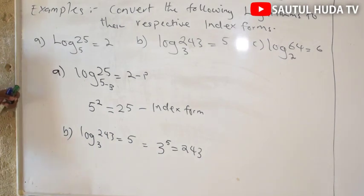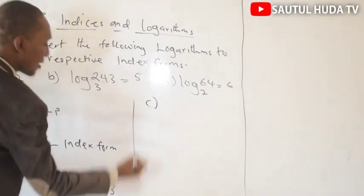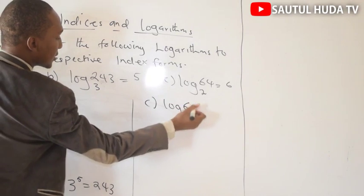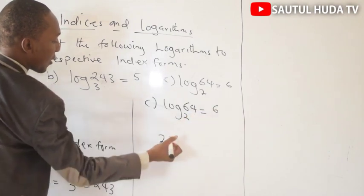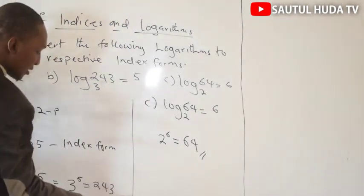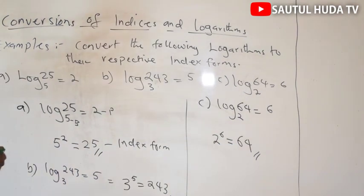Example C: log 64 base 2 equals to 6. Converting to index form: base 2, power 6 equals to number 64. So 2 power 6 equals to 64. This is how we convert from logarithm form to index form, and that's the concept we'll use to simplify logarithms.